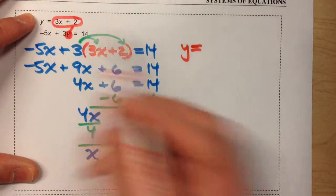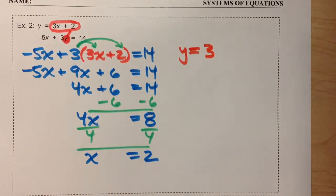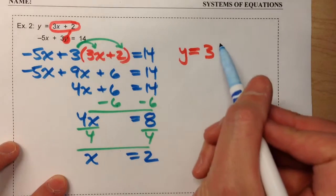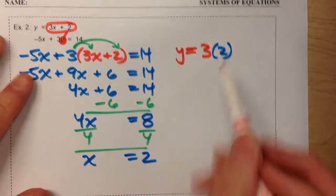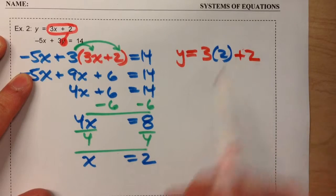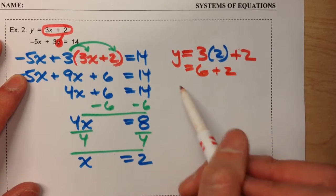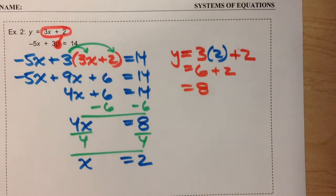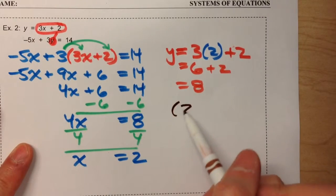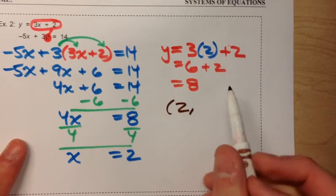So y equals 3 times x. We know x is 2, so I'm going to replace x with 2. Plus 2. And I know 3 times 2 is 6, plus 2 is 8, so we've just found the point of intersection. Our x value is 2, our y value is 8.